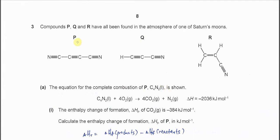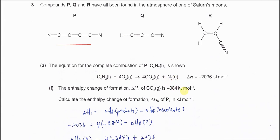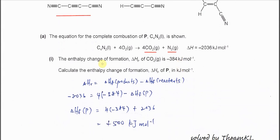Okay, question three. We have three compounds P, Q, and R. For part A, the equation for the complete combustion of P, which is C4N2 liquid, is shown in this equation. Delta H is negative 2036 kilojoules per mole. So combustion will form CO2 and N2. This is the equation we just follow. Part one: the enthalpy change of formation for CO2 is negative 384 kilojoules per mole. Calculate the delta HF of P.